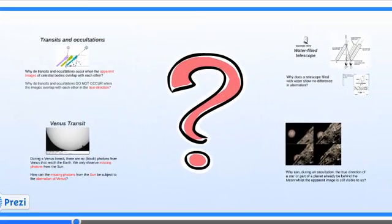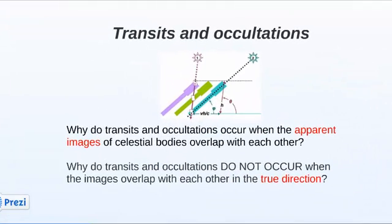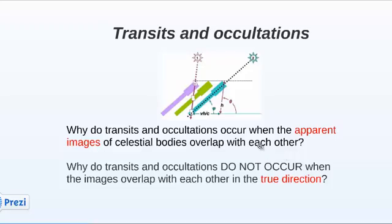Time for a number of interesting questions. Transits and occultations occur at the moment when the apparent images of celestial bodies overlap with each other. The question is: why the apparent images, and not the images as they come from their true direction?